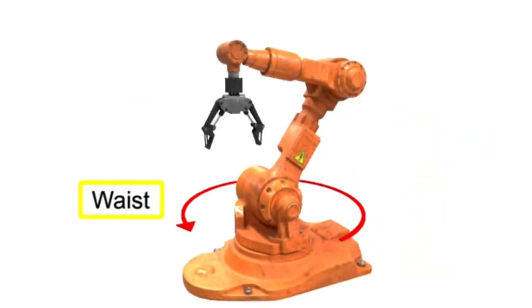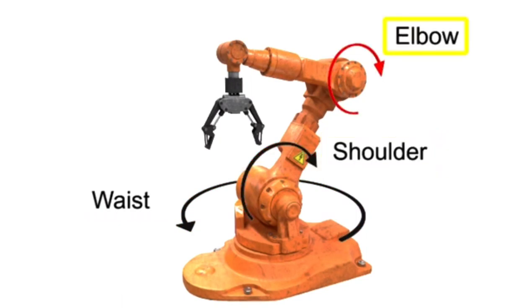These particular motions help to locate the tool in the work area and are called position axes. Most robots have at least three position axes to help position the tool in the work area.